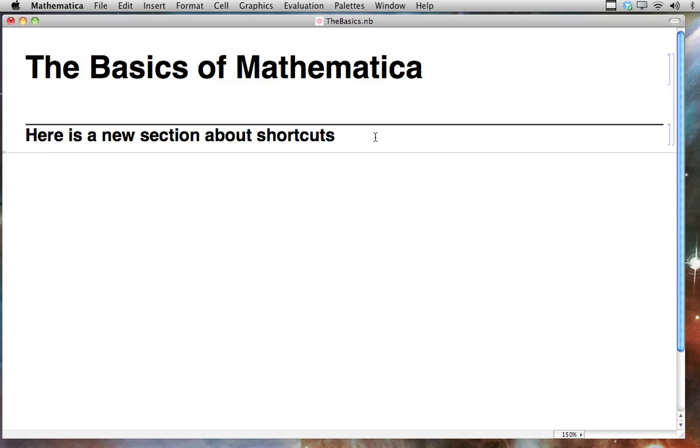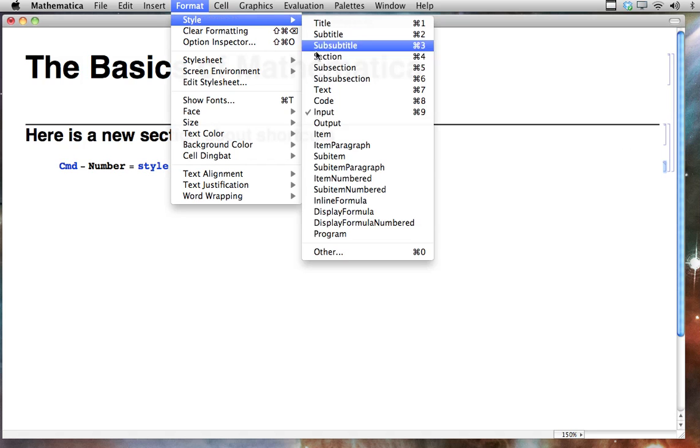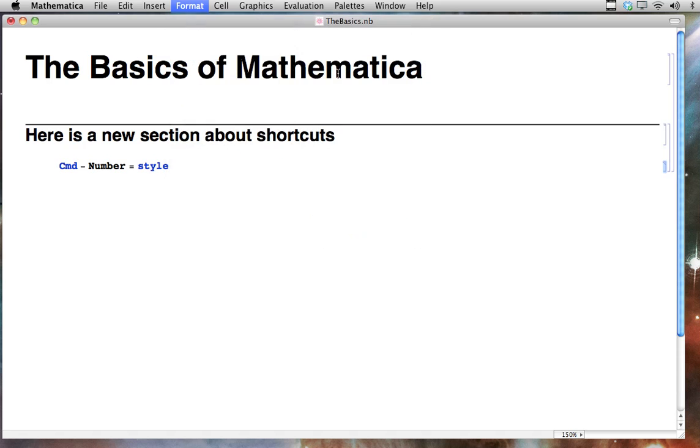Now I can start typing some more text. I can type command number equals style, and you can see it's got all this colorization going on. That's because Mathematica treats it as input text, but if I come over to format, style, and instead call this a subsection, it'll give it a little bullet.